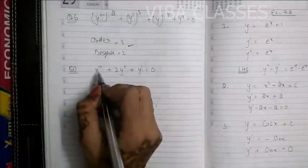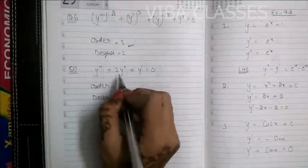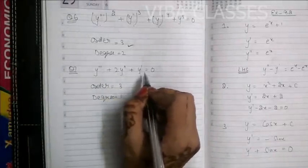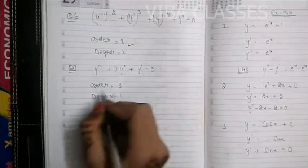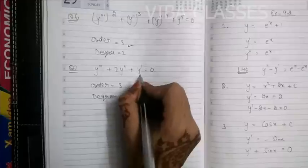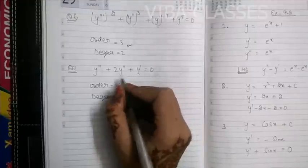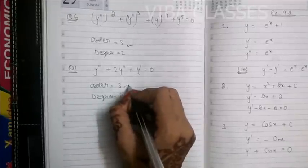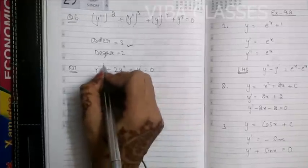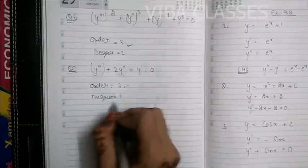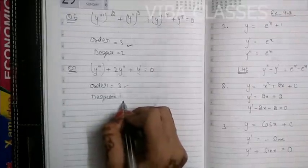I hope it is clear. Next: y''' + 2y'' + y' = 0. The third order derivative is present, so the order is 3. The power of that highest order derivative is 1, so the degree is 1.